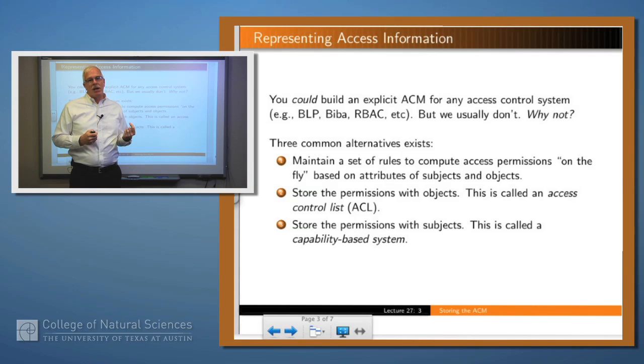When we talked about Bell and LaPadula, we said instead of storing that information explicitly, we store it implicitly in the set of rules that we have, like simple security and the star property, that allow us to compute that information on the fly. For example, if you know the level of a subject and an object, you can decide by the simple security and the star property what accesses that subject is allowed to that object.